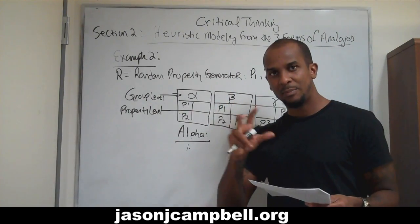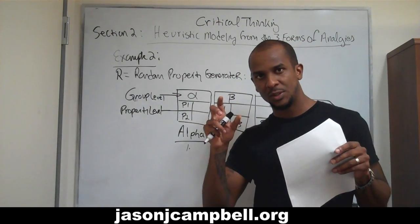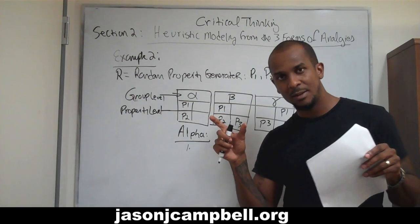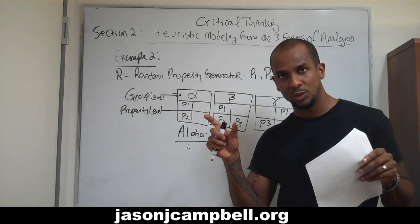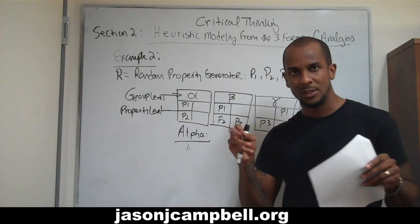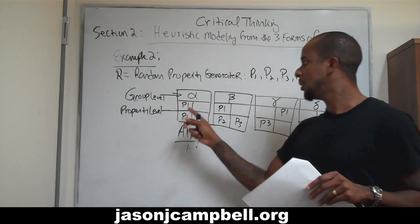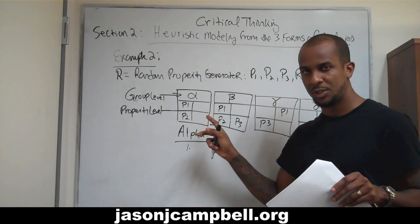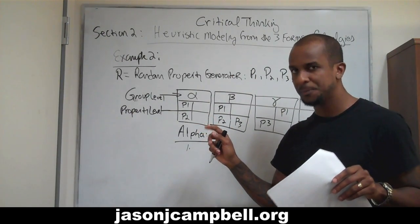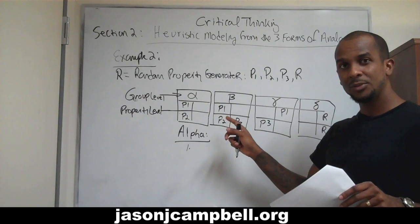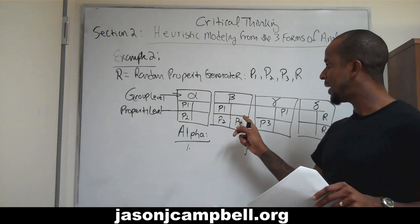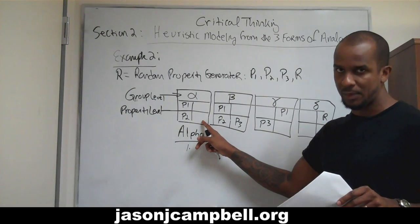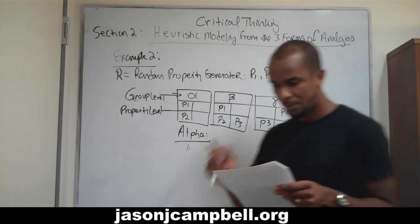So, both alpha and beta, in their comparison, have positive analogical relationships and a negative analogical relationship, but we need to be precise. What relations do they share? P1 and P2 — those are the positive analogical relationships. What's the negative analogical relationship? The fact that beta has property P3, but alpha does not have property P3.